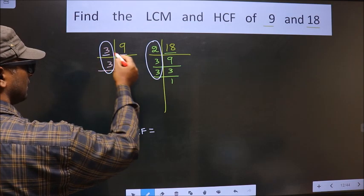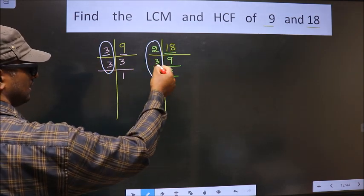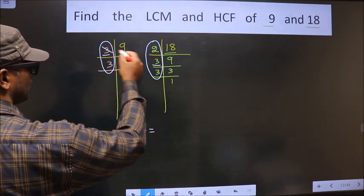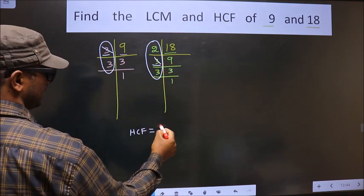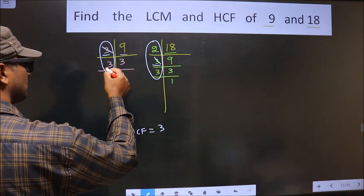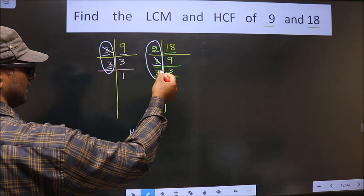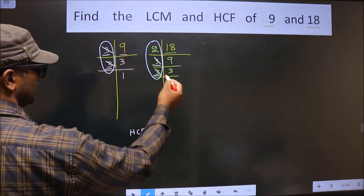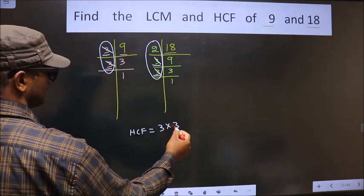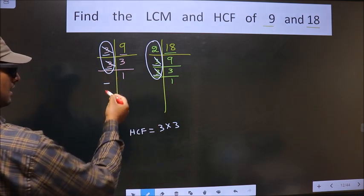Starting with the number 3. Do we have 3 here? Yes. So you cut 3 right here. Next number is 3. Do we have 3 here? Yes. So you cut 3 right here. No more numbers are left.